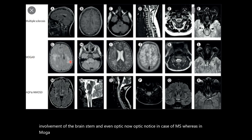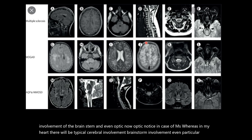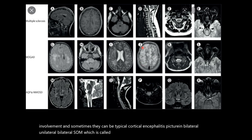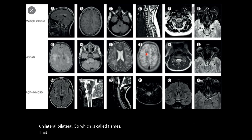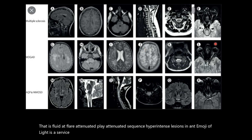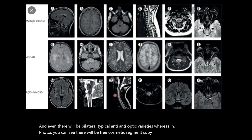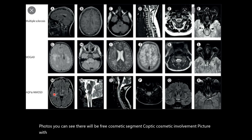In MOGARD there is typical cerebral involvement, brainstem involvement, peduncular involvement, and sometimes cortical encephalitis — which can be unilateral or bilateral — called FLAMES: FLAIR-attenuated sequence hyperintense lesions in anti-MOG encephalitis associated with seizures, with bilateral anterior optic neuritis. In NMOSD, pre-chiasmatic segment and optic chiasmatic involvement, LETM, and periependymal or periventricular surface involvement are classical.